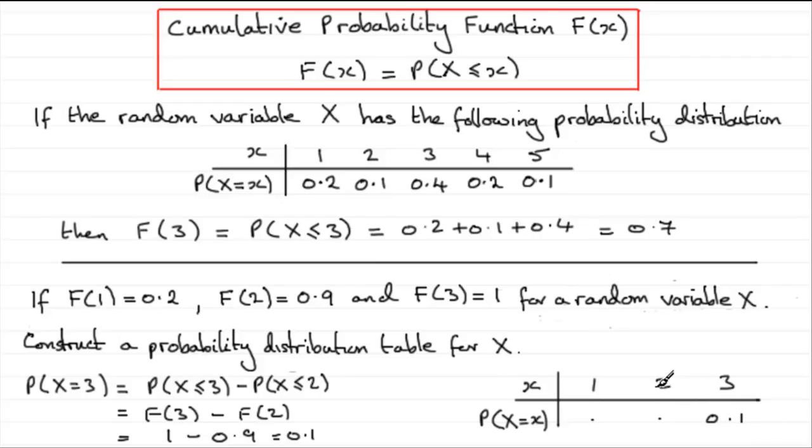What about 2? Well similarly, to get the probability that x equals 2, all I need to do is to do f of 2 minus f of 1. 0.9 minus 0.2 is going to give me 0.7.